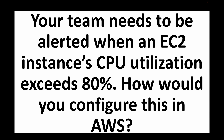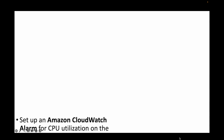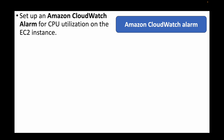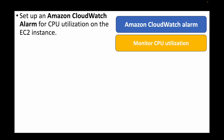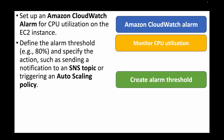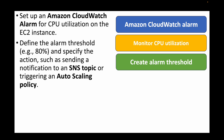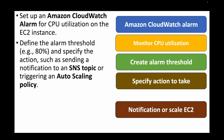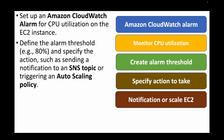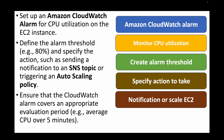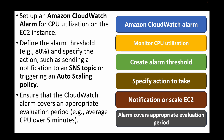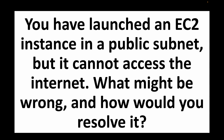The next question: your team needs to be alerted when an EC2 instance's CPU utilization exceeds 80% — how would you configure this in AWS? We will use Amazon CloudWatch. We create a CloudWatch alarm for CPU utilization on the EC2 instance with a threshold of 80%. We then specify an action — either sending a notification via an SNS topic or triggering auto scaling to launch new instances. We can also ensure the alarm covers an appropriate evaluation period, for example only triggering if CPU stays high for five minutes.